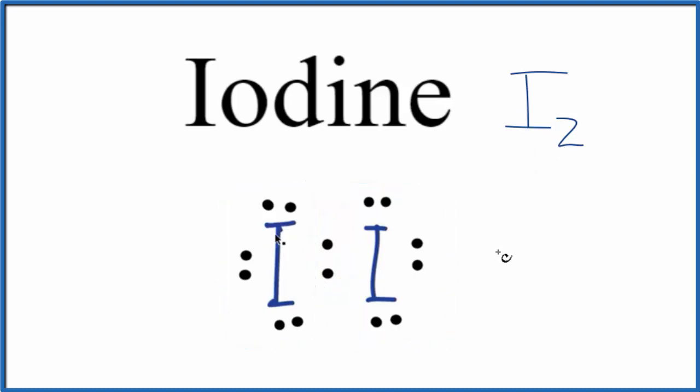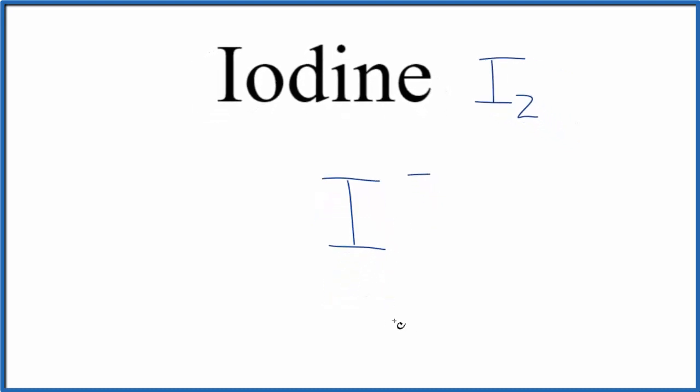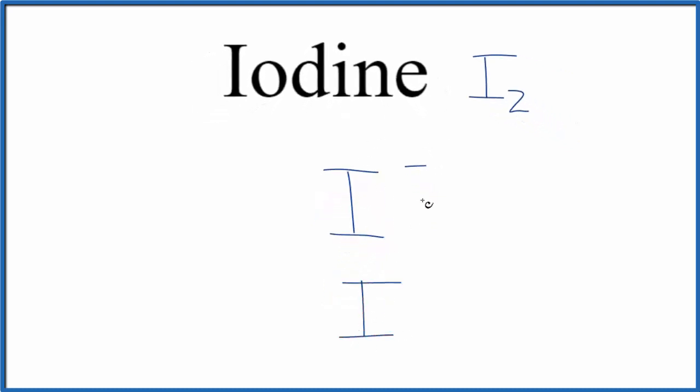You can also have the iodide ion, and that looks like this. And you're probably thinking, but wait, we said you can't have iodine all by itself. I⁻ is very different than just I. Here we have an extra electron, and this is an ion. It's a negative ion called the iodide ion.